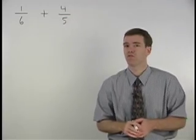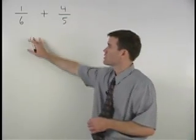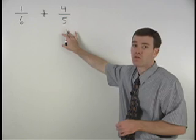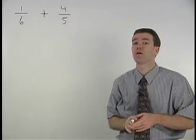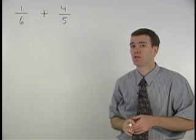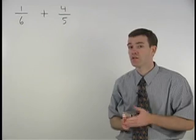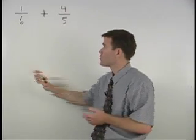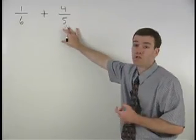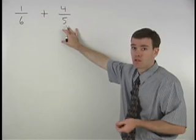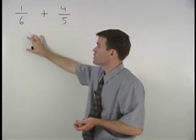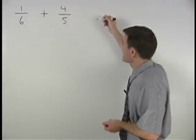To add these two fractions together, one-sixth plus four-fifths, we need a common denominator. The common denominator is simply the least common multiple for the two denominators. So here our first step is to find the least common multiple for six and five.